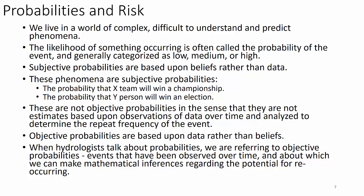Subjective probabilities appear in everyday language — which team will win a championship, who will win an election. That's not what we talk about in hydrology. When hydrologists talk about risk and probabilities, we talk about objective probabilities based upon data rather than beliefs — events that have been observed over time about which we can make mathematical inferences. If something happened 20 times in the last 50 years, in the next 50 years it'll probably happen 20 more times. It's based on observations and data.